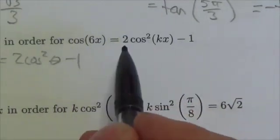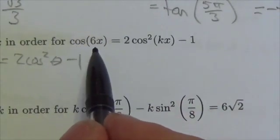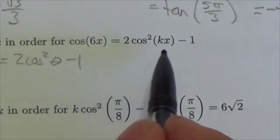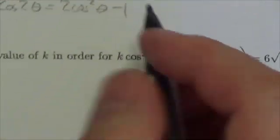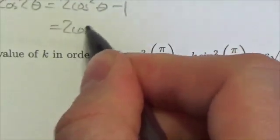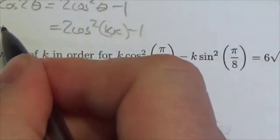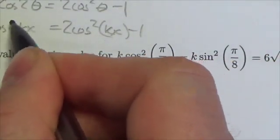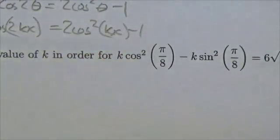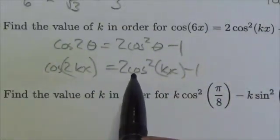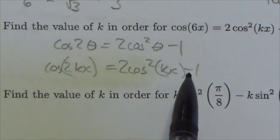Now let's go back and compare it to this. I've got the cosine of 6x and this right here. Now we know that if this is the cosine squared of kx minus 1, that this angle here should be twice that, so 2kx. 2 cosine squared of kx minus 1.